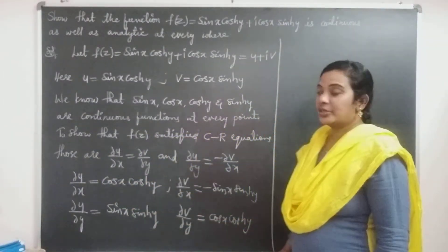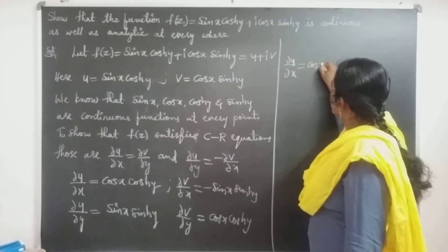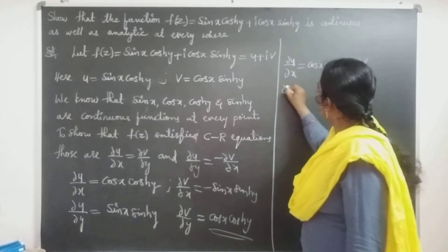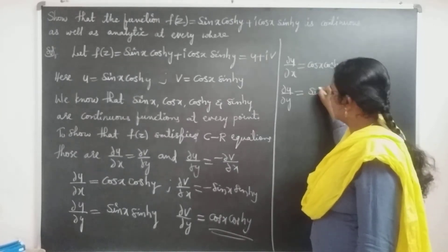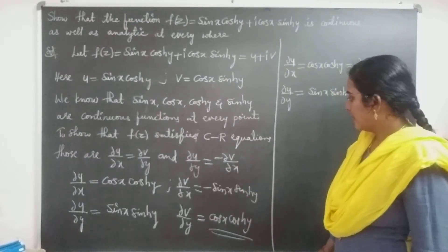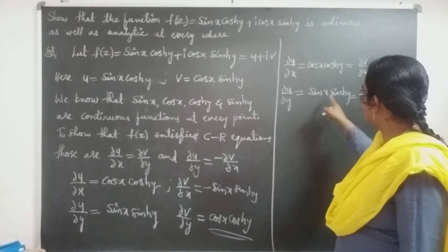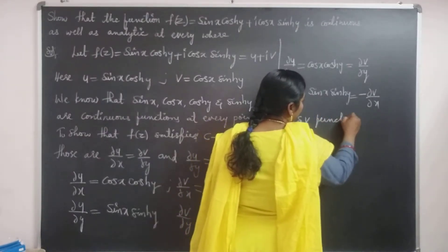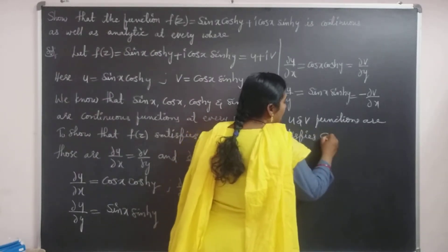Now we can check the Cauchy-Riemann equations. ∂u/∂x = cos(x)cosh(y), which equals ∂v/∂y. And ∂u/∂y = sin(x)sinh(y), which equals −∂v/∂x. Taking the negative of ∂v/∂x = −sin(x)sinh(y), it becomes +sin(x)sinh(y). Therefore, u and v satisfy the Cauchy-Riemann equations.